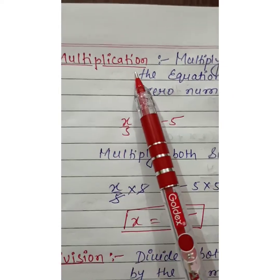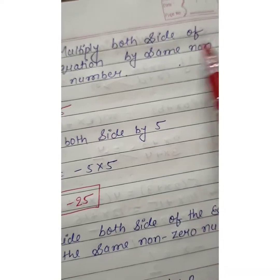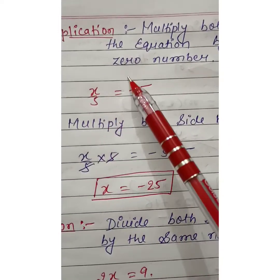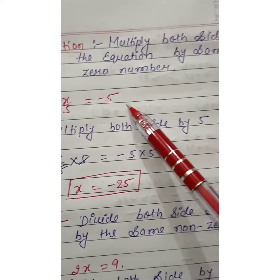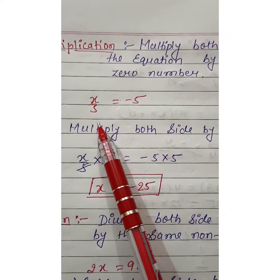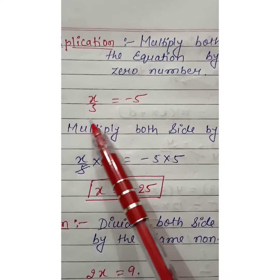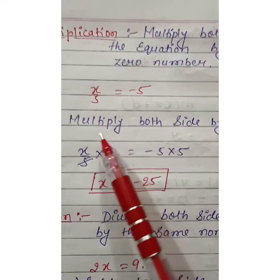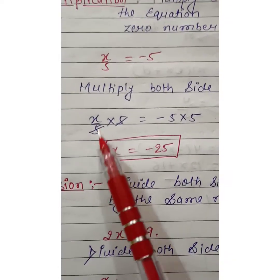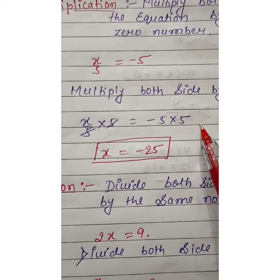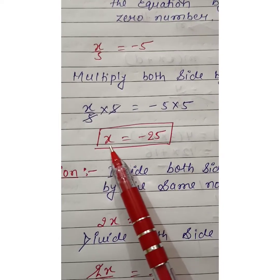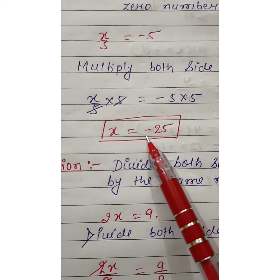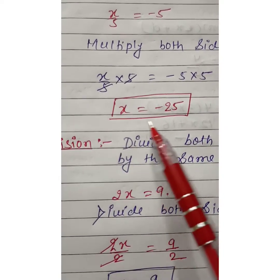Next condition is multiplication. Multiply both sides of the equation by the same non-zero number. See here x by 5 equals minus 5. Multiply both sides by 5. So finally we obtain x equals minus 25.